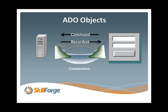That's a simplified explanation of how these three objects work, but it gives us a good basis for writing our code. First we have to create the connection object in order to send things across, then we send across our command object which is our request for data, and what we get back is the record set object.